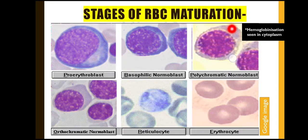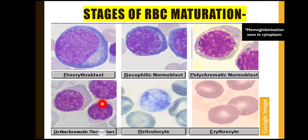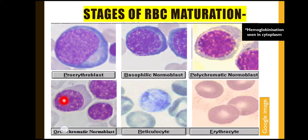This is an important point: hemoglobin synthesis can be seen by Romanowsky stains at the polychromatic normoblast stage, also called the intermediate normoblast. The chromatin is more condensed than in the basophilic normoblast. The third stage is the orthochromatic normoblast, also known as the late normoblast. Here the chromatin is further condensed, the cytoplasm is grayish in color, the nucleus is eccentric, and it is ready to be extruded out of the cell.